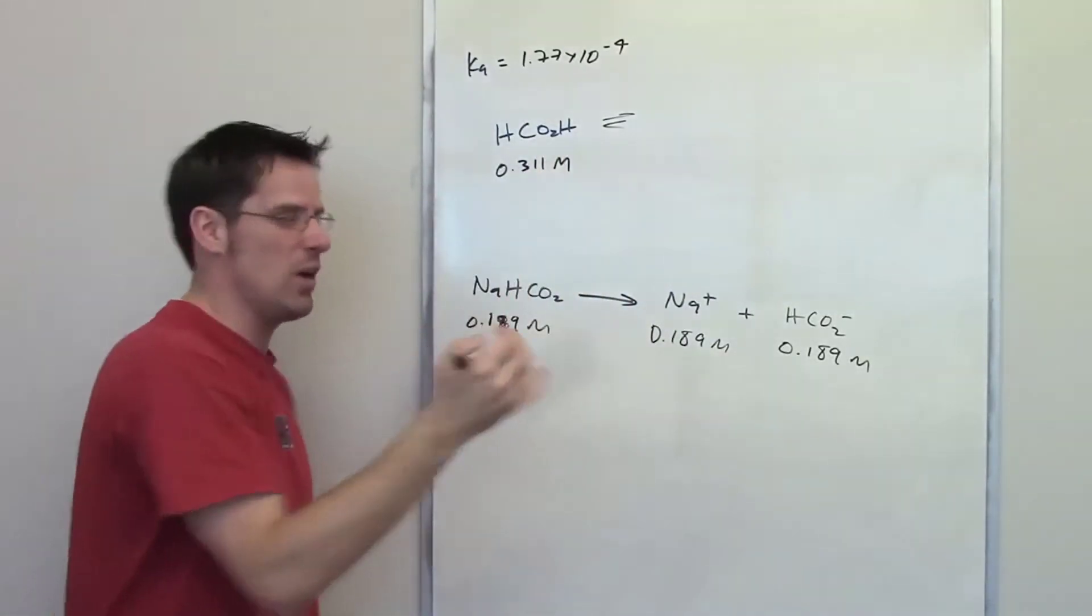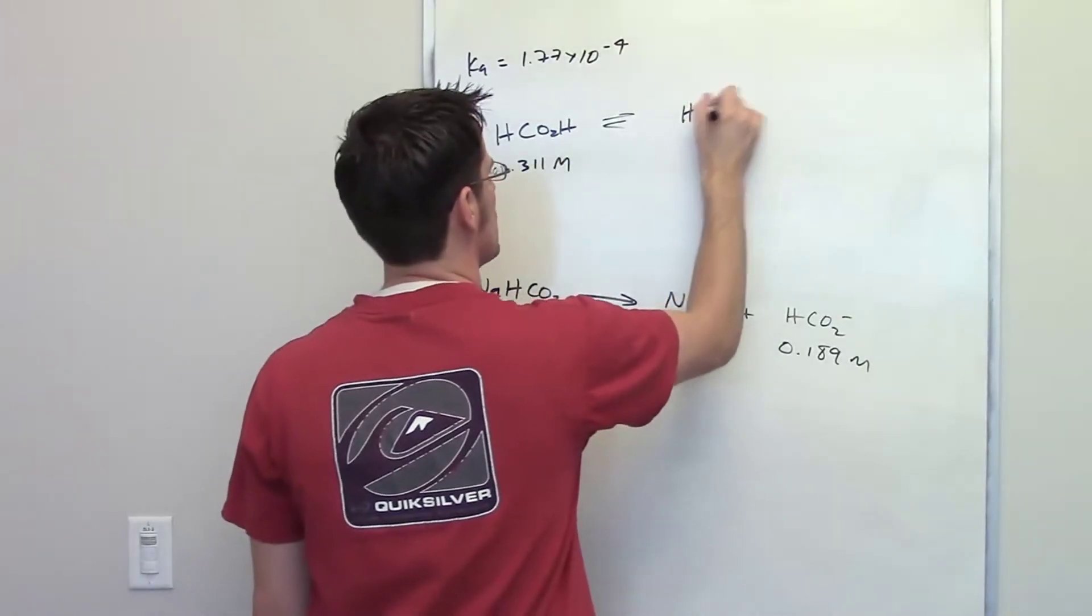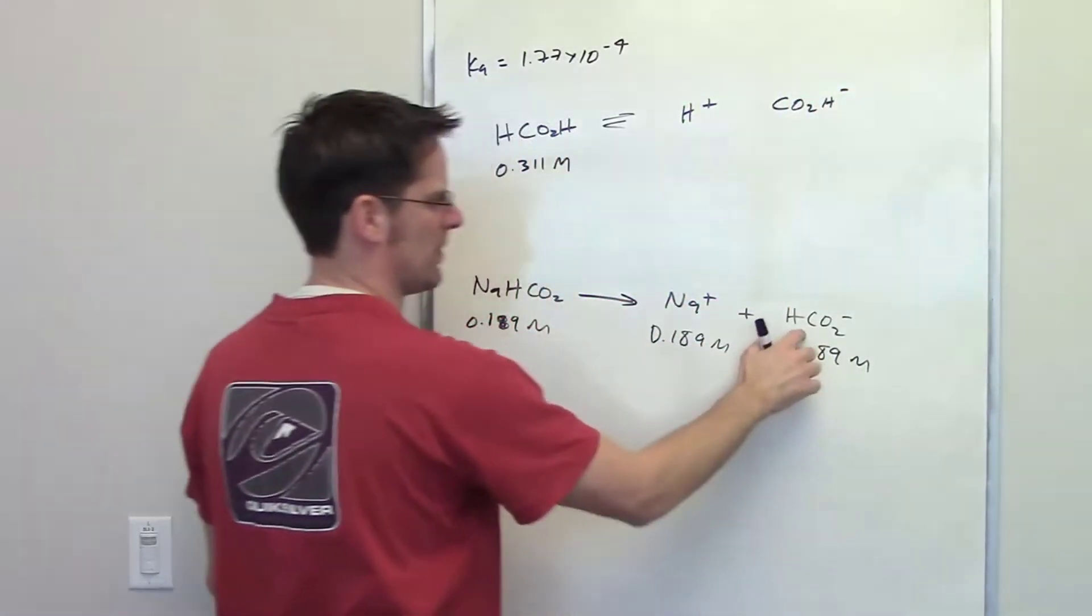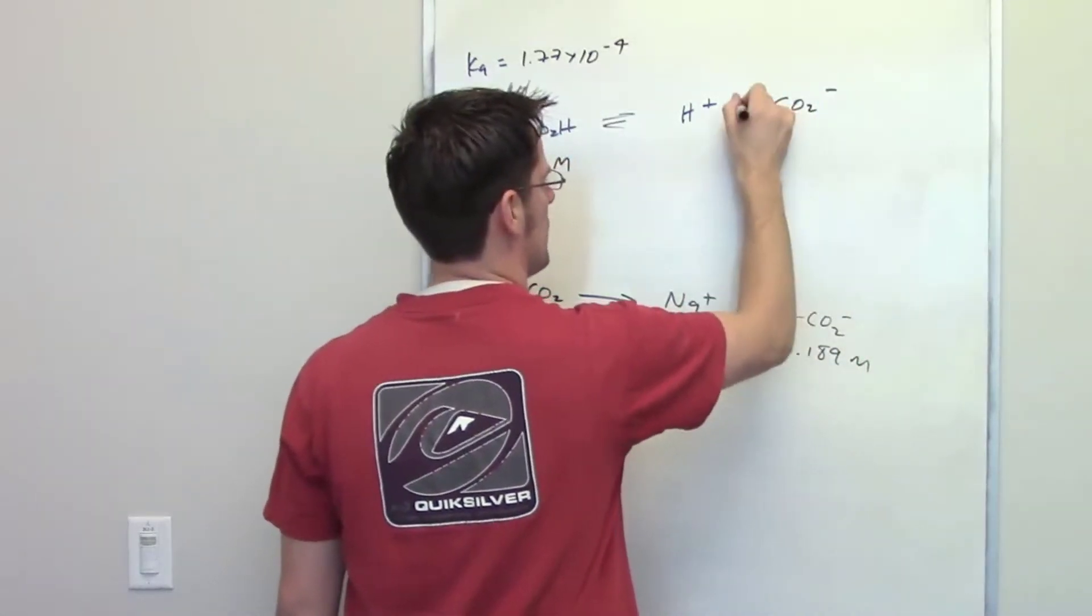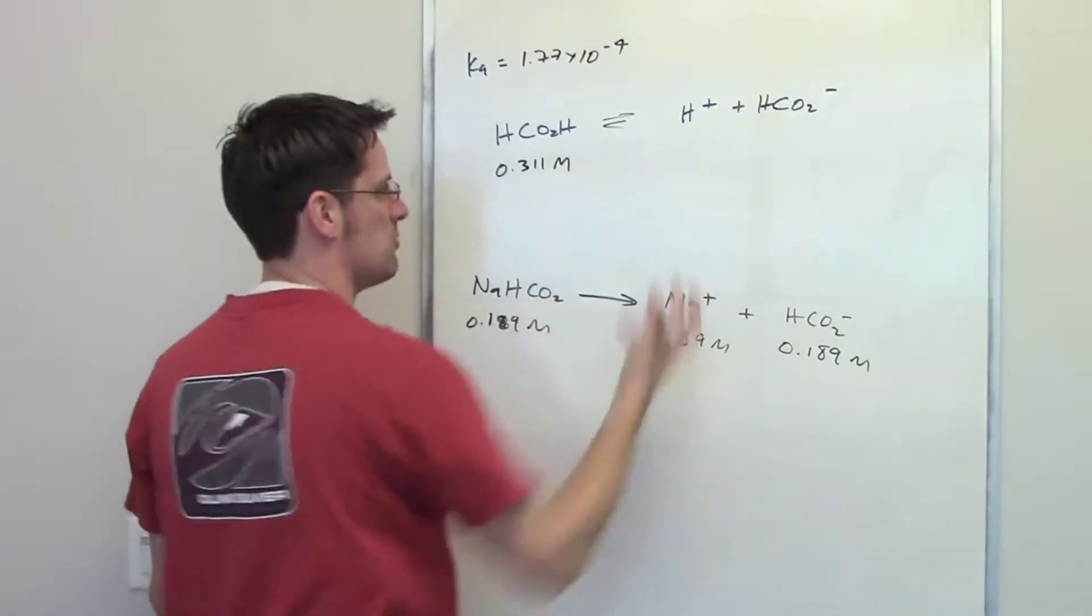So there's going to be a two-way arrow into H plus and CO2H minus. And I can rewrite that to look like this thing, because indeed it is that thing, it is formate. So it gives H plus off and formate.